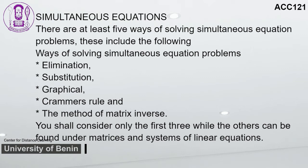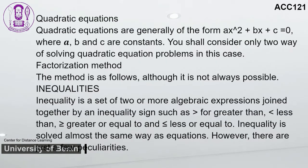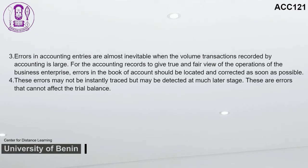Summary for Study Session 3: A trial balance is the list of balances extracted from different ledgers primarily to show the arithmetic accuracy of accounting postings — if entries are properly posted and summed up, both sides should be equal. It is the easiest way of verifying arithmetical accuracy; if both sides agree, accounts are correctly drawn up, but this is not conclusive proof. Errors in accounting entries are almost inevitable with large transaction volumes. For records to give a true and fair view, errors should be located and corrected as soon as possible. These errors may not be instantly traced but may be detected at a much later stage.